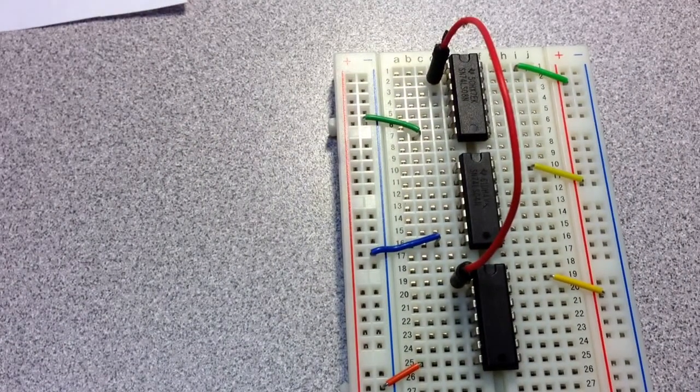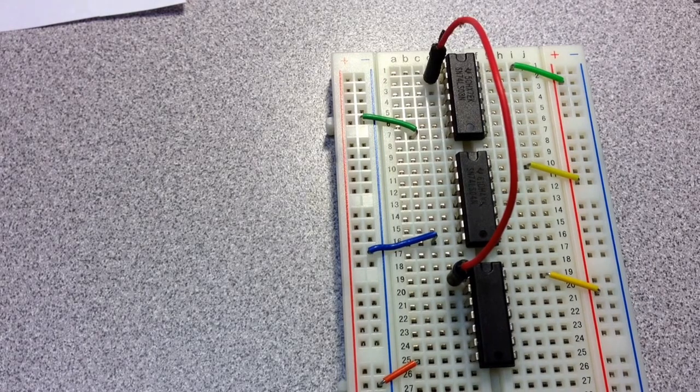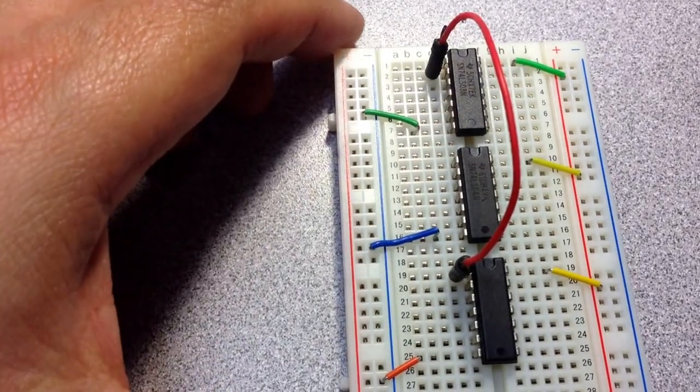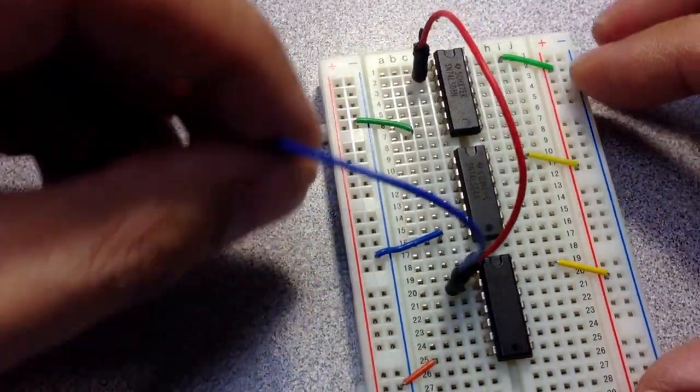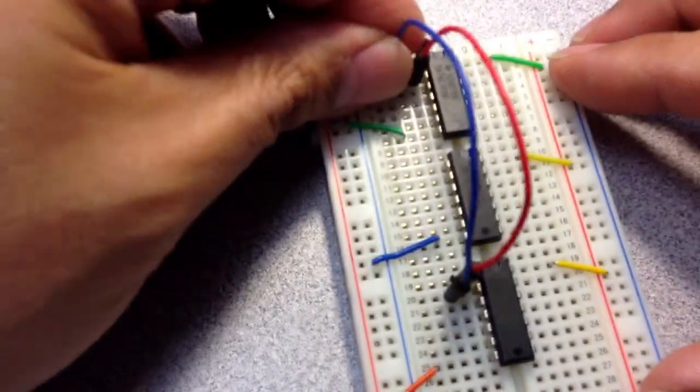Okay, pin 1, pin 2. All right, so let's move on to the next one, which is pin 2 of the OR gate to pin 1 of the AND gate.